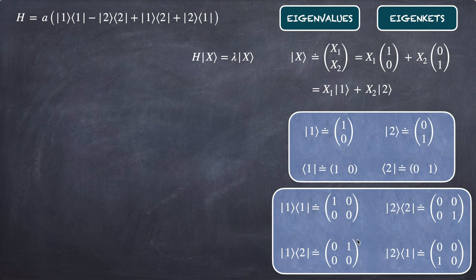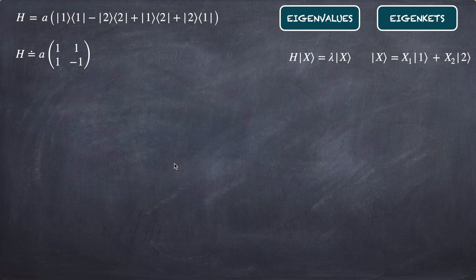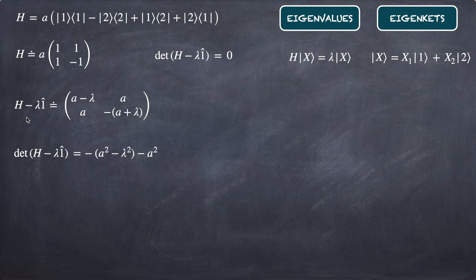Now we have all four projectors to write the Hamiltonian H. It is a multiplying |1⟩⟨1| minus |2⟩⟨2| plus |1⟩⟨2| plus |2⟩⟨1|. To find eigenvalues we compute the determinant of (H − λI) = 0. The diagonal terms become (a − λ) and (−a − λ), which factors as (a + λ), and the off-diagonal terms are equal to a.